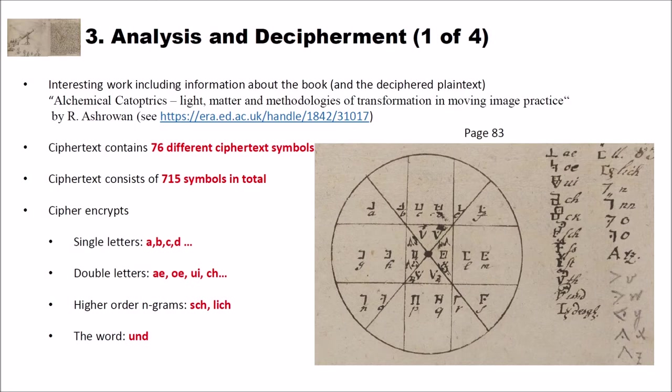Now, let's perform a small analysis and a decipherment of the aforementioned or shown ciphertext. And at first, I have to tell you that this ciphertext, of course, already was decrypted by previous work. And I found a very interesting work dealing with that ciphertext and with that book. And if you're interested in that, here's the link. I will post this link also below the video. And this work is a PDF or a book that you can find online. It's called Alchemical Catoptrix, Light Matter and Methodologies of Transformation in Moving Image Practice. And it's written by Ash Rovan. As I said, I will put the link below this video.